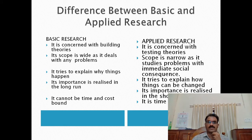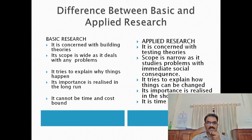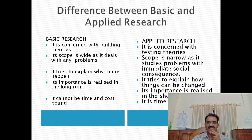Now let us discuss the important differences between basic research and applied research. First, basic research is concerned with building theories, while applied research is concerned with testing theories. The second difference is that the scope of basic research is wide — it can deal with any problem — but the scope of applied research is narrow, because it studies problems with immediate social consequence.